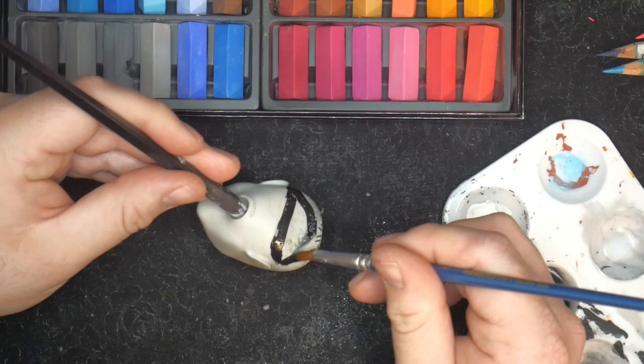For this, I'm using yarn flocking. To make yarn flocking, just take yarn and chew it up with a pair of scissors.